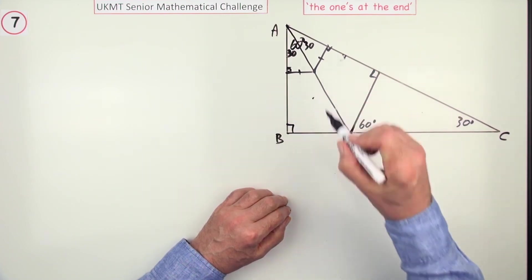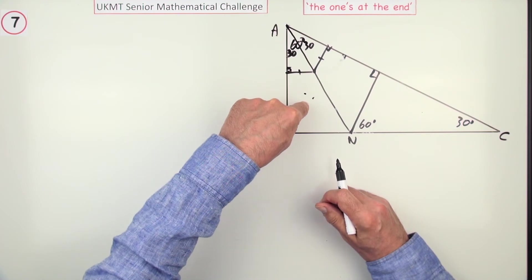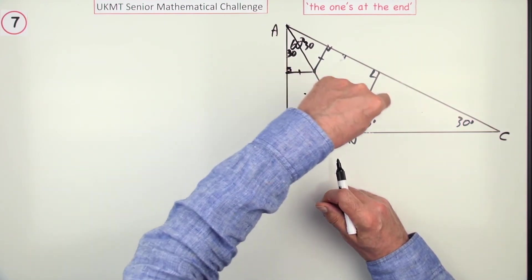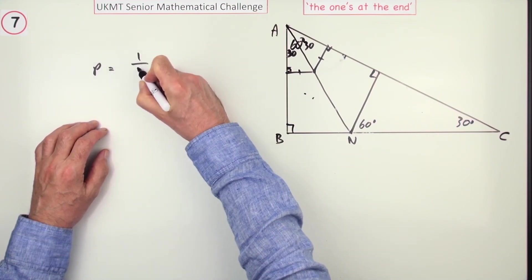So, for a point to be closer to AB, it must lie in this triangle. So, what fraction of the points lie in this triangle? Well, that's one out of the three bits, so they are straight away. The probability is going to be one-third.